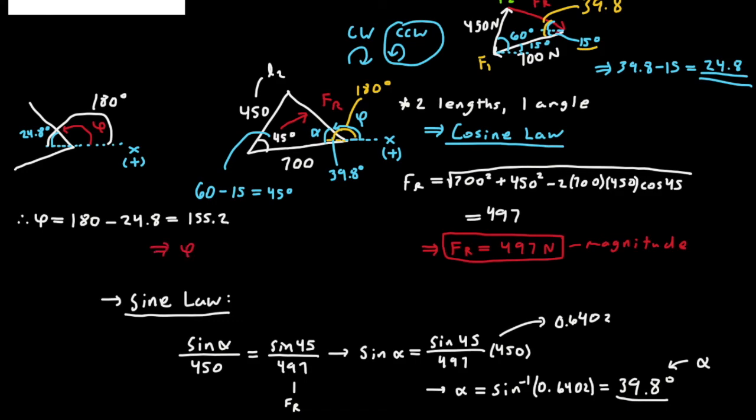So hence, phi will be equal to about 155 degrees, which is the direction of the resultant force FR measured counterclockwise from the positive x-axis.